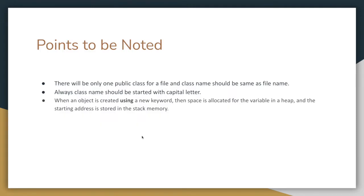Points to note: only one public class can exist per file, and the class name should be the same as the file name. The class name should always start with a capital letter. When an object is created using the new keyword, space is allocated for its variables in the heap memory and the address is stored in stack memory.